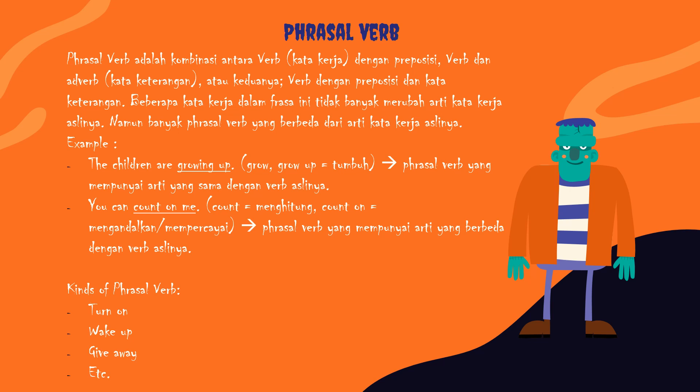Contohnya: 'The children are growing up' — grow dan grow up sama artinya, yaitu bertumbuh. Itu contoh phrasal verb yang tidak merubah arti kata kerja aslinya. Sedangkan contoh yang berbeda: 'You can count on me' — count sendiri artinya menghitung, tapi count on sebagai phrasal verb artinya adalah mengandalkan atau mempercayai. Jadi artinya berbeda dari kata kerja aslinya.